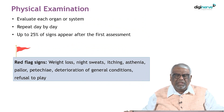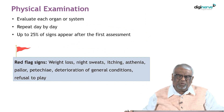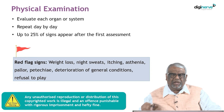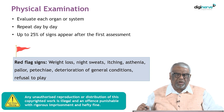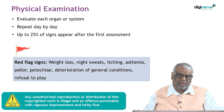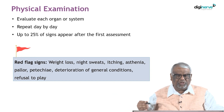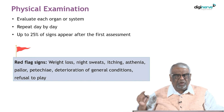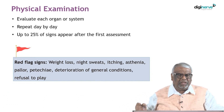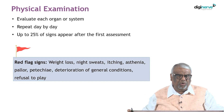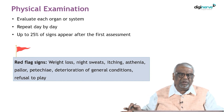The next step is physical examination — thoroughly evaluate each organ system and repeat this day by day. This is very important: do not rely solely on your first-day examination, because up to 25% of signs appear after the first assessment. If the child has been hospitalized for almost a week, daily look for new signs to appear, as they will give you clues to the underlying disease.